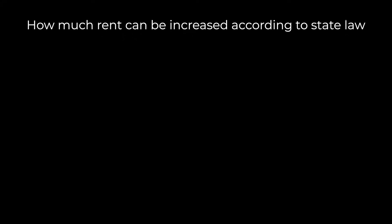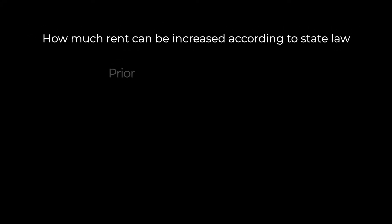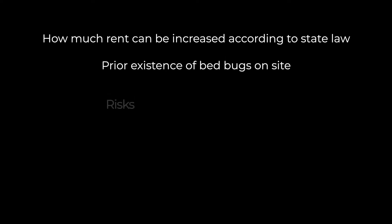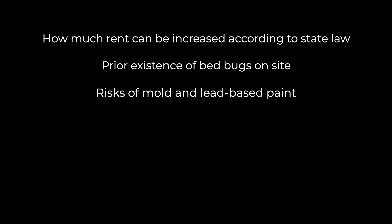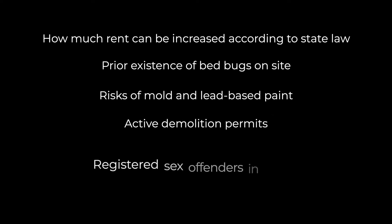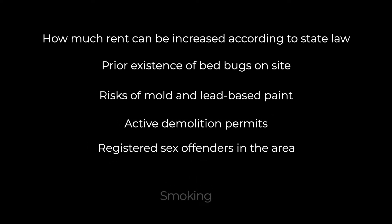Now we'll move on to required disclosures. In California, the landlord is required to include a total of 12 disclosures in the lease agreement, including how much rent can be increased according to state law, prior existence of bedbugs on site, risks of mold and lead-based paint, active demolition permits, registered sex offenders in the area, smoking policy, and more. Potential tenants should thoroughly read all of the disclosures prior to signing the lease agreement. For a comprehensive list of all required and optional disclosures, visit the link in the description below.